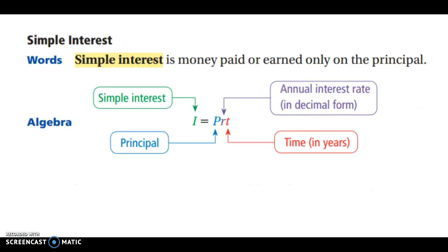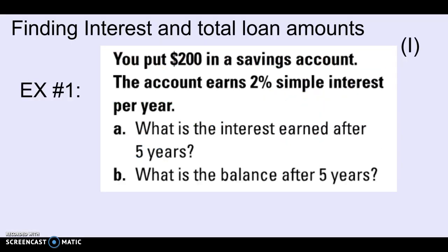So in the box where it says formula, this is what you're going to want to write down. I equals PRT. I is the interest. P is the principal. R is the rate. Make sure you write it as a decimal. And then T is time, and it has to be in years. So if you come across a problem that says like 36 months, you need to convert that into years first before you plug it in here. So we're going to use this formula to answer a few examples or do a few examples together.